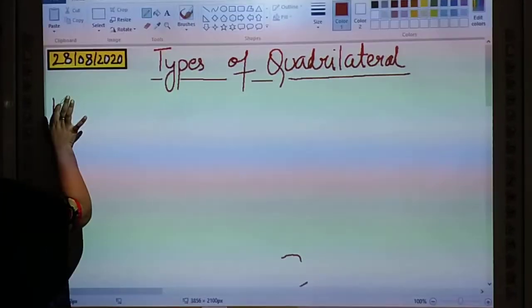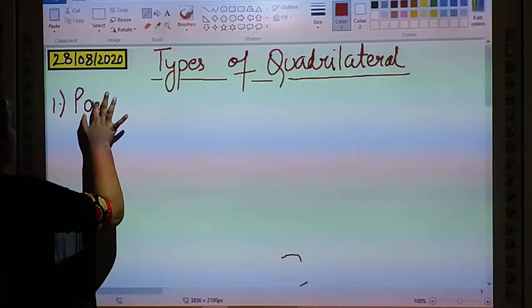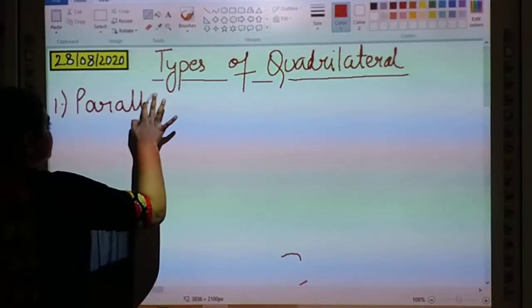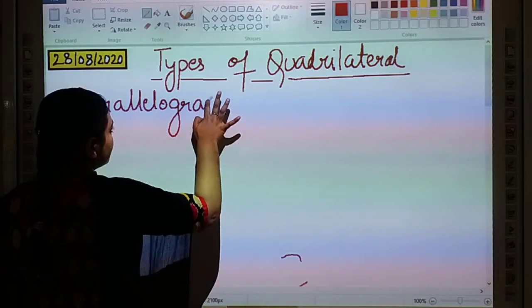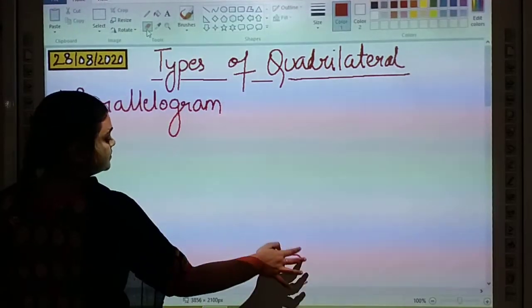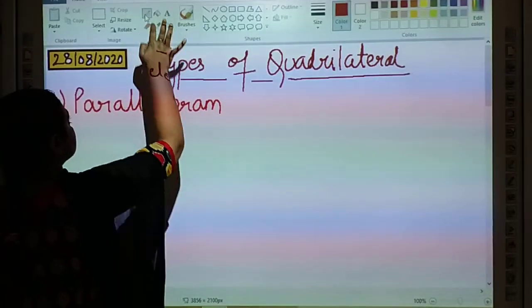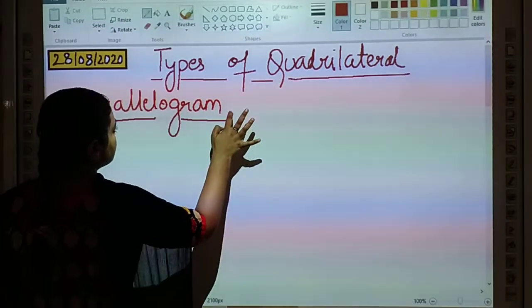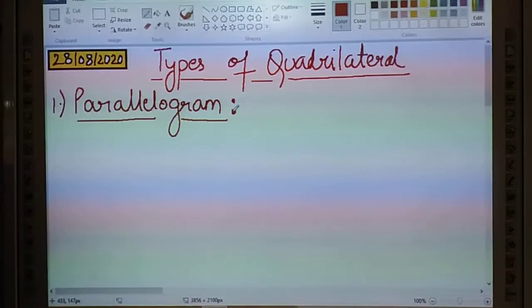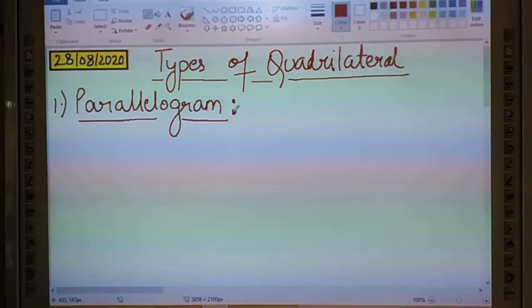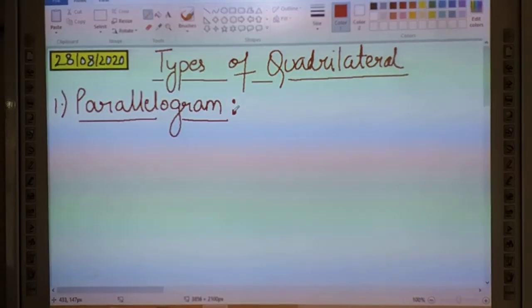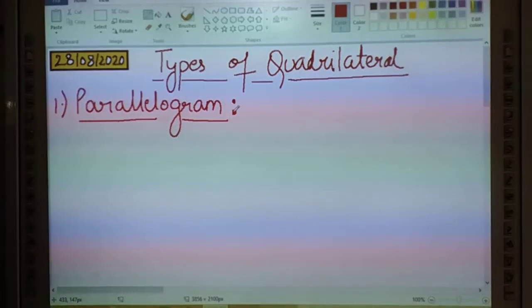So the first type of quadrilateral which we are going to study is parallelogram. The properties which we will be studying about these types of quadrilaterals will be based upon the opposite sides, the opposite angles and the diagonals of the quadrilateral.